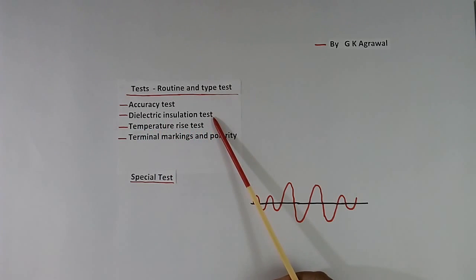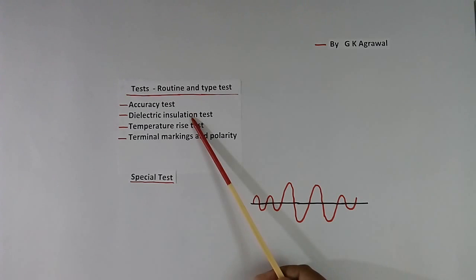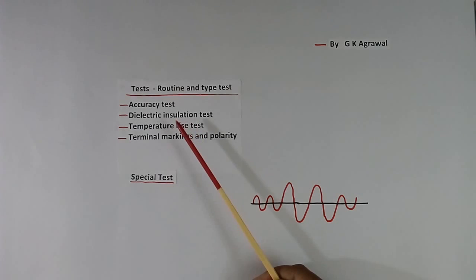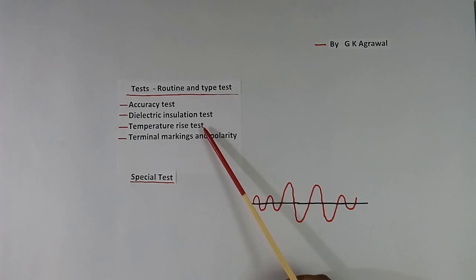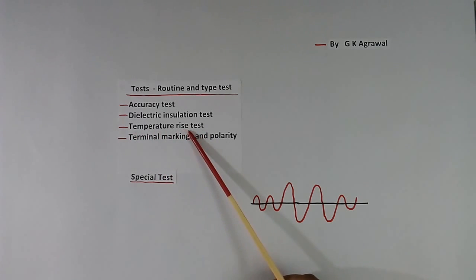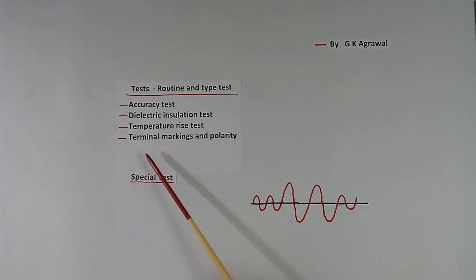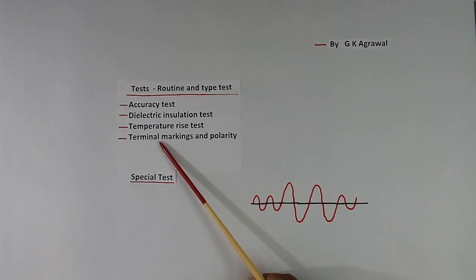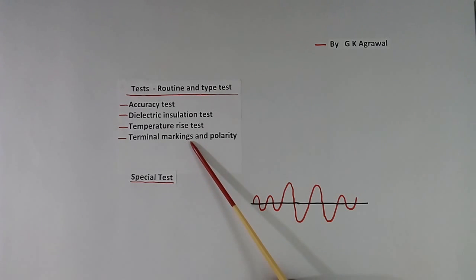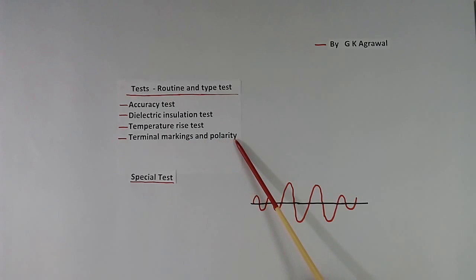Then the dielectric insulation test — we apply high voltage across primary and secondary, or primary and ground, and see whether the insulation can withstand the high voltage. Then the temperature rise test — suppose the transformer is rated 10 VA and the ambient temperature is 70°C. We connect the full load of 10 VA, place the transformer in a chamber at 70°C, keep it on for many hours, and check what is the temperature rise of the transformer. Then terminal marking and polarity — we check whether the terminal type is given properly, such as nut-bolt, soldering, or wire, and whether markings P1, P2, S1, S2 are correct, and polarity is marked properly.